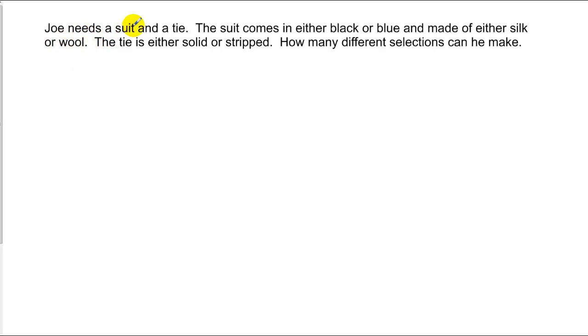So we've got this guy, Joe, and he needs a suit and a tie. The suit comes in either black or blue, and it's made in silk or wool. The tie is either striped or solid. We want to know how many different selections he can make, how many different ways he can wear this suit. The way we do it, and you've probably done this in middle school, is we make a tree diagram. What we do is we start with either the suit, the tie, or the type of material, and list those out. So let's go with black and blue. Now, he's got a choice. If he wears a black suit, he can wear either wool or silk. And from that, if he wears a black suit that's wool, he can wear two different ties: a solid tie or a striped tie. And if he wears a silk suit, he can wear a solid tie or a striped tie.